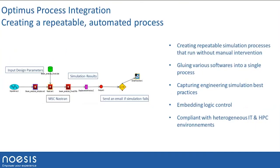The purpose of process integration is to create a repeatable simulation process that you can run without manual intervention. The idea is to glue different software together — you can drive Patran and Nastran, or Marc and Mentat, and other in-house or commercial code. This captures engineering best practices in a company. You can have embedded logic control — for example, a workflow step that sends a mail to the user if a certain value is reached. It's also compliant with heterogeneous IT and HPC environments, connecting to any HPC driven with LSF, PBS, grid engine, or even cloud computing.